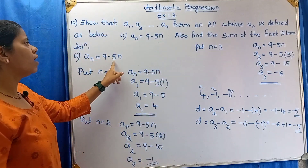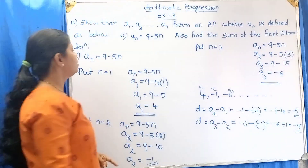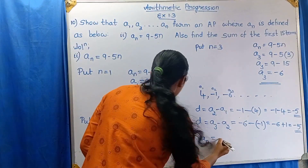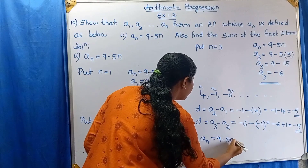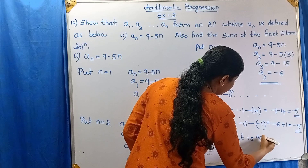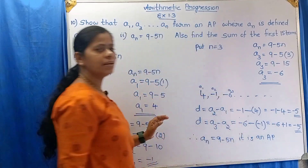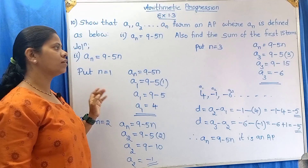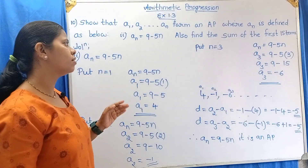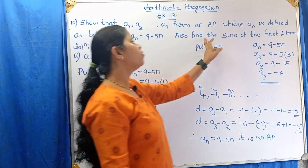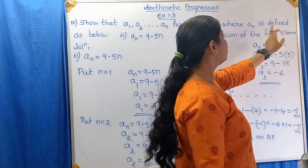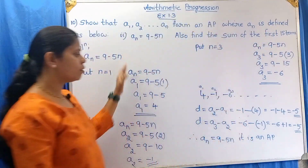Therefore, An = 9 − 5n is an AP. We have completed the first part of the question. Now we have to solve the second part: find the sum of the first 15 terms.